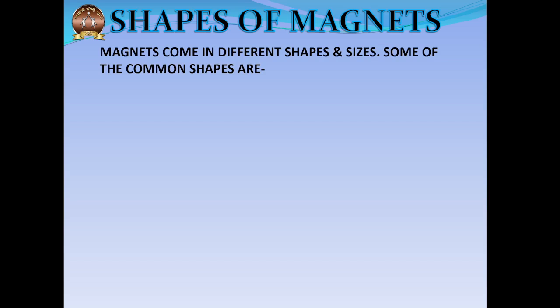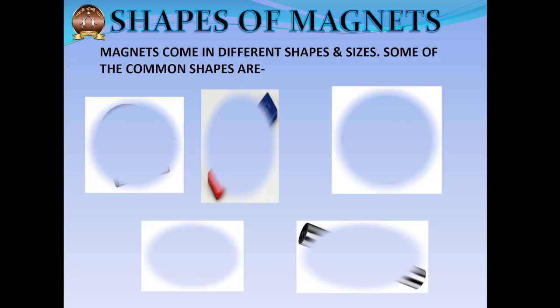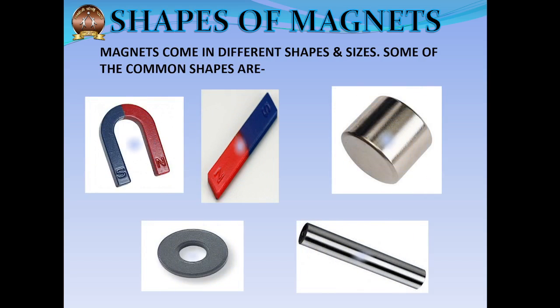These magnets are artificial magnets, or man-made magnets. They come in different shapes and sizes depending on the way in which they are supposed to be used. Let's take a look at some of the common shapes in which magnets come.